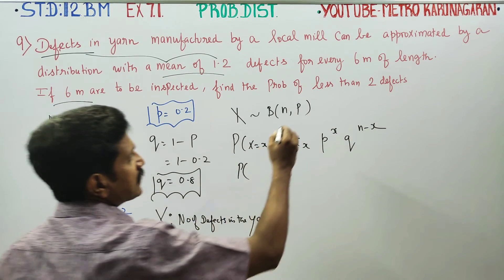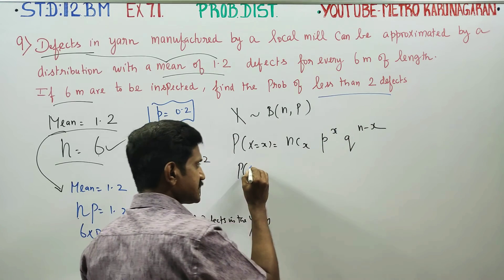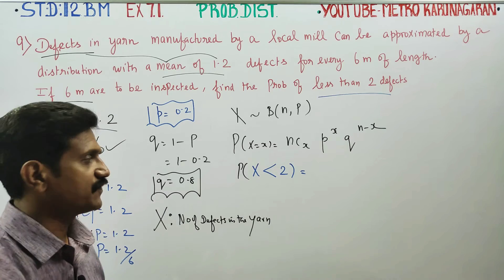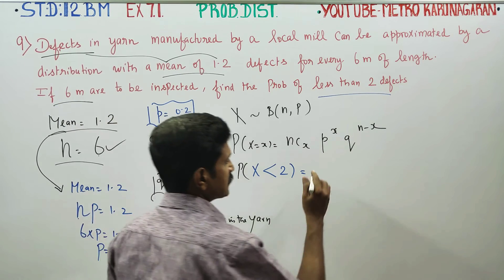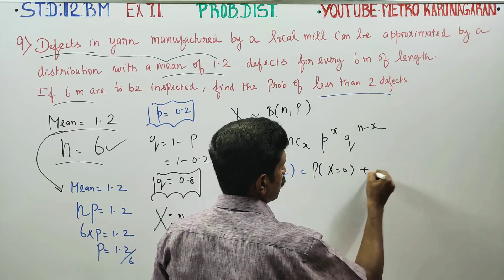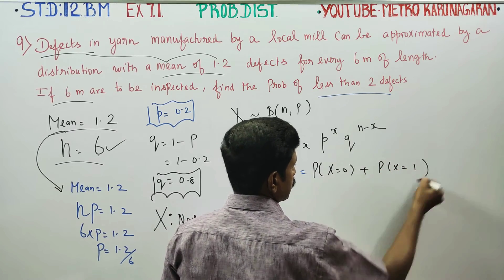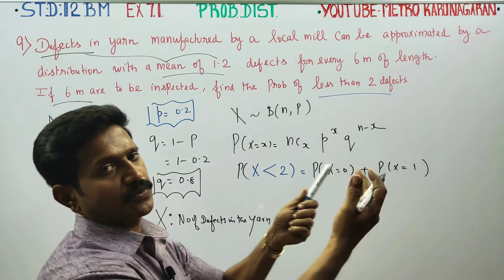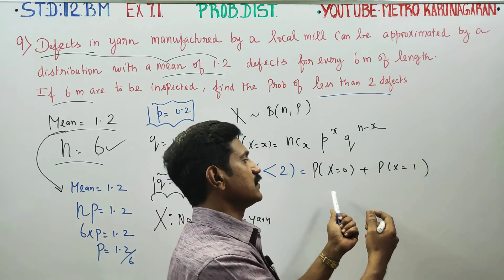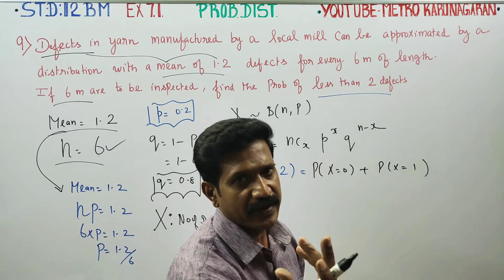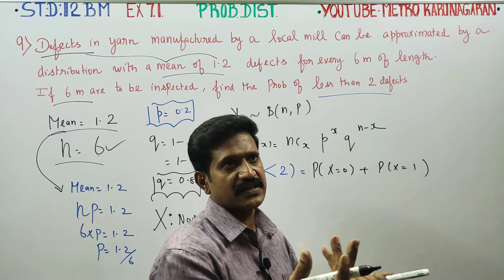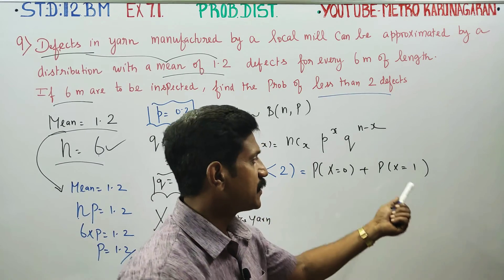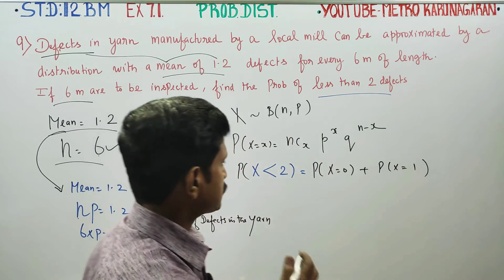For less than two defects, P(X < 2) means x equals 0 and x equals 1. So we compute P(X = 0) plus P(X = 1).